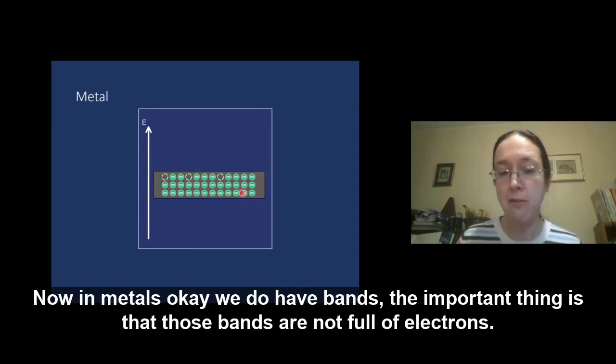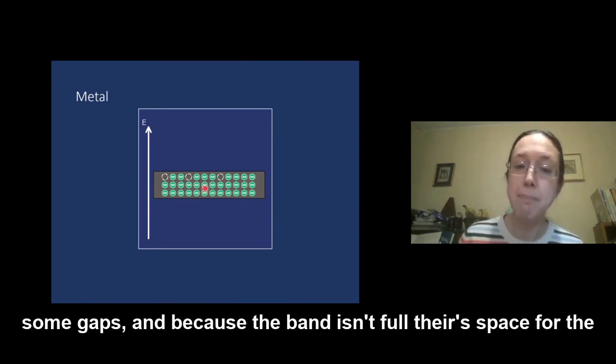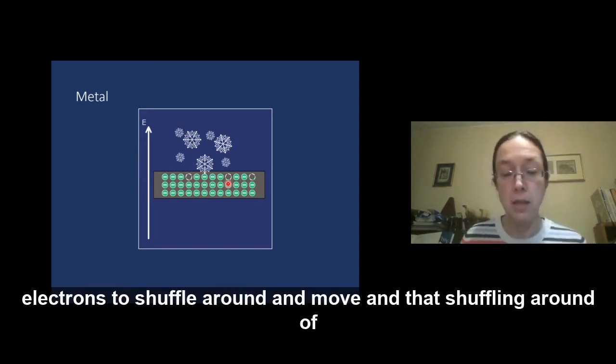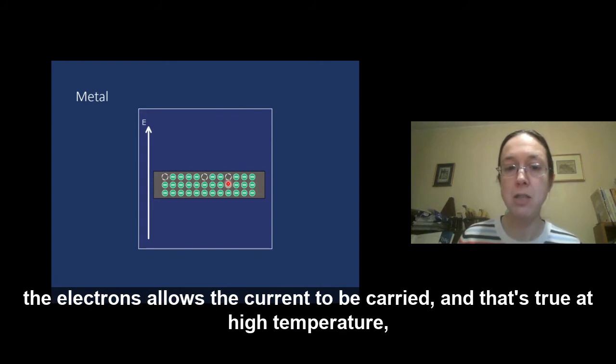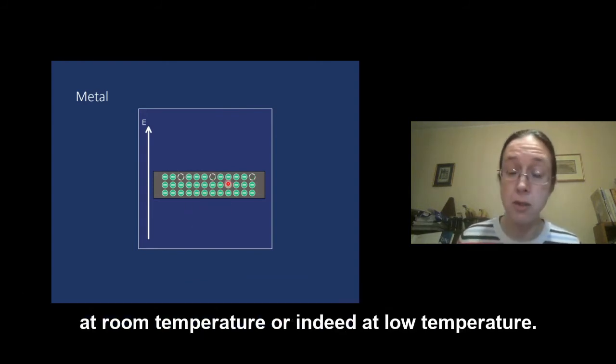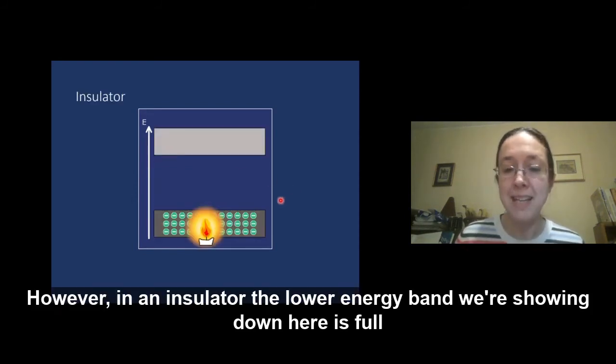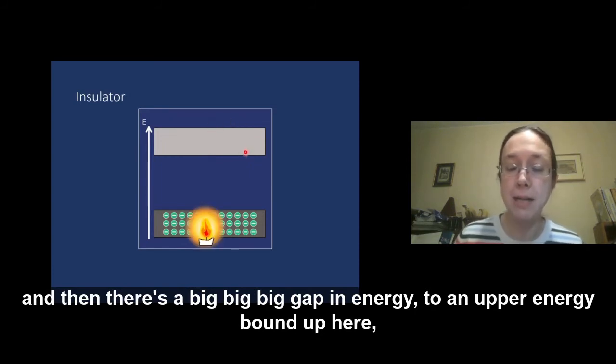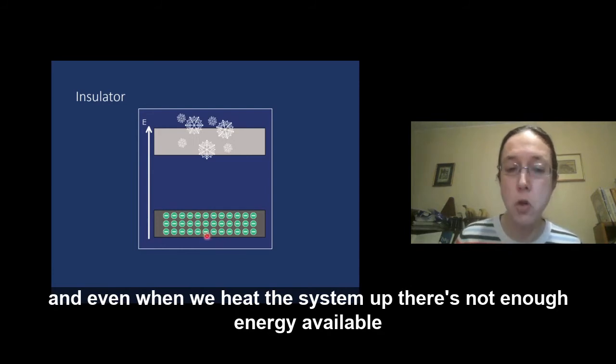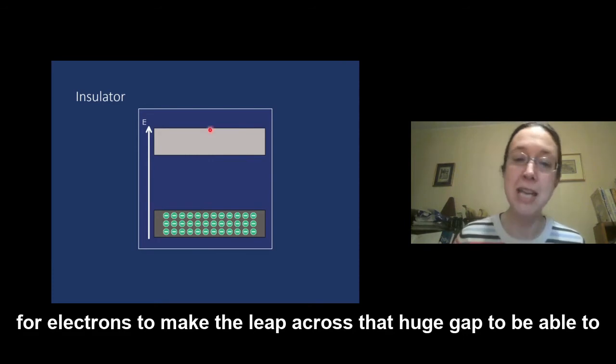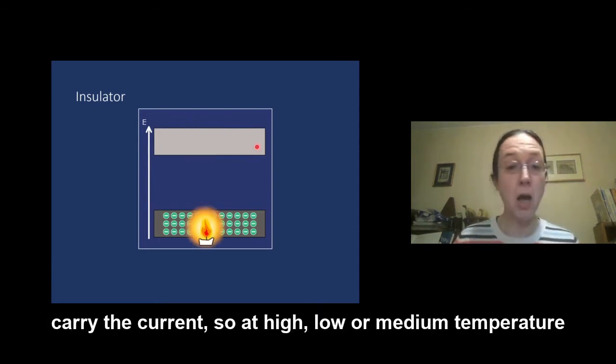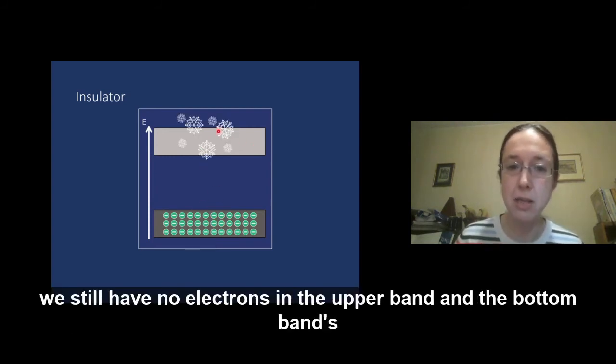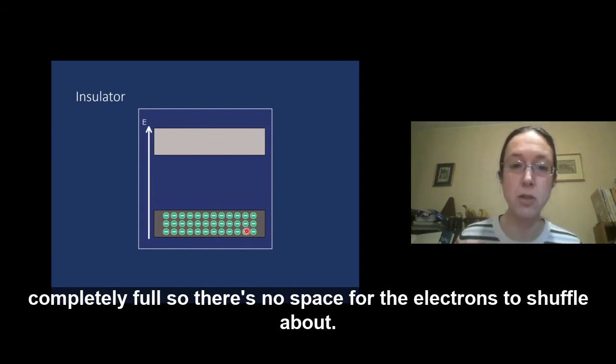Now, in metals, we do have bands. The important thing is that those bands are not full of electrons. Their bands have some space in them, some gaps. And because the band isn't full, there's space for the electrons to shuffle around and move. And that shuffling around of the electrons allows the current to be carried. And that's true at high temperature, at room temperature or indeed at low temperature. However, in an insulator, the lower energy band we're showing down here is full. And then there's a big, big, big gap in energy to an upper energy band up here. And even when we heat the system up, there's not enough energy available for electrons to make the leap across that huge gap to be able to carry the current. So at high, low or medium temperature, we still have no electrons in the upper band and the bottom band is completely full. So there's no space for the electrons to shuffle about.